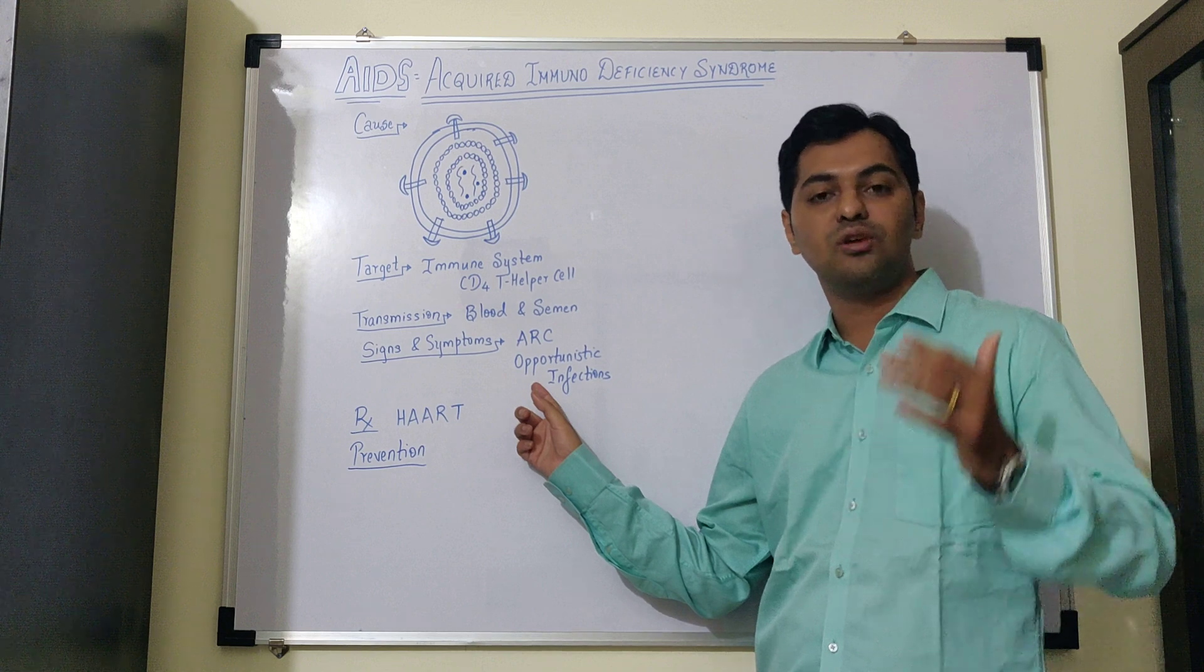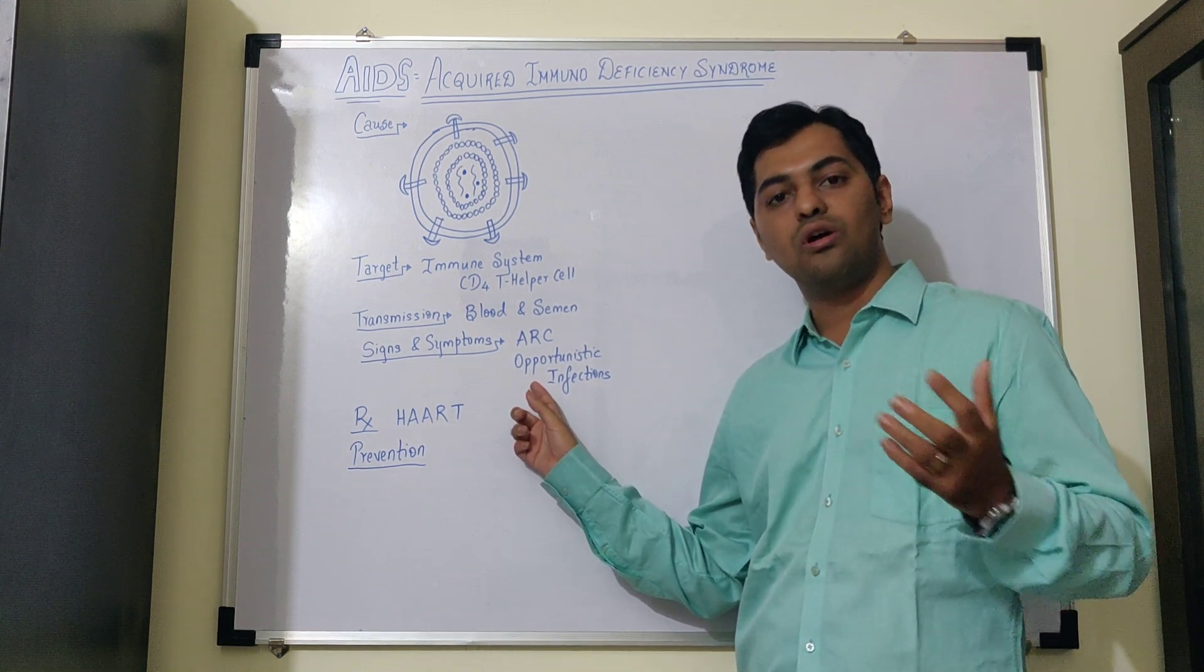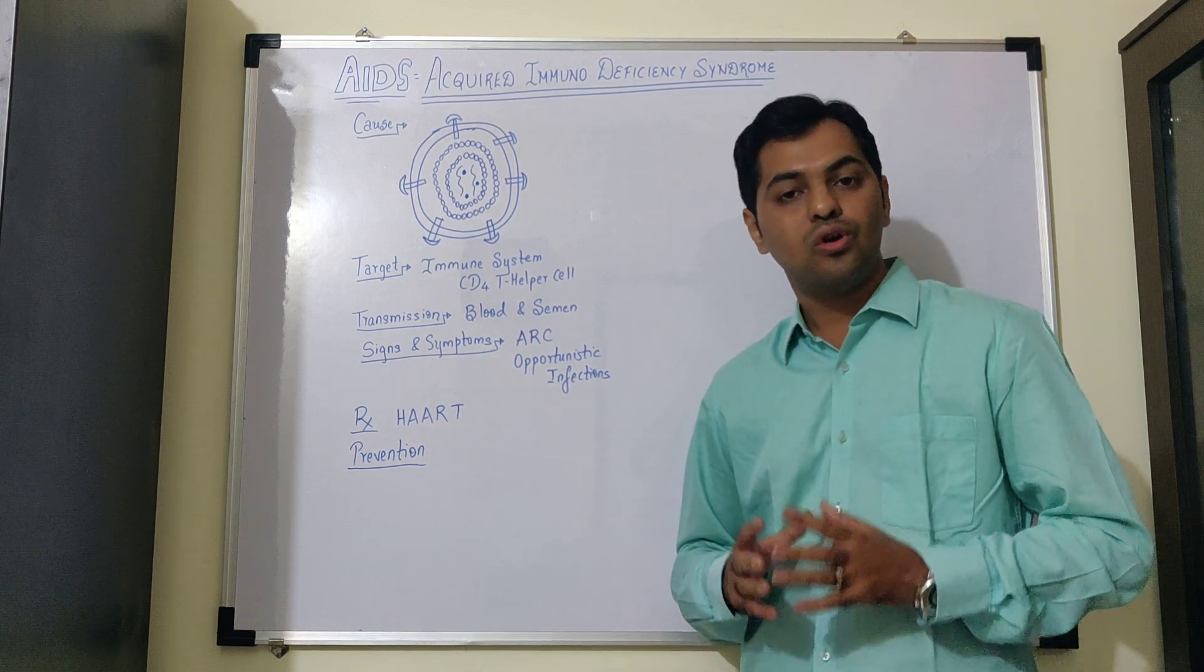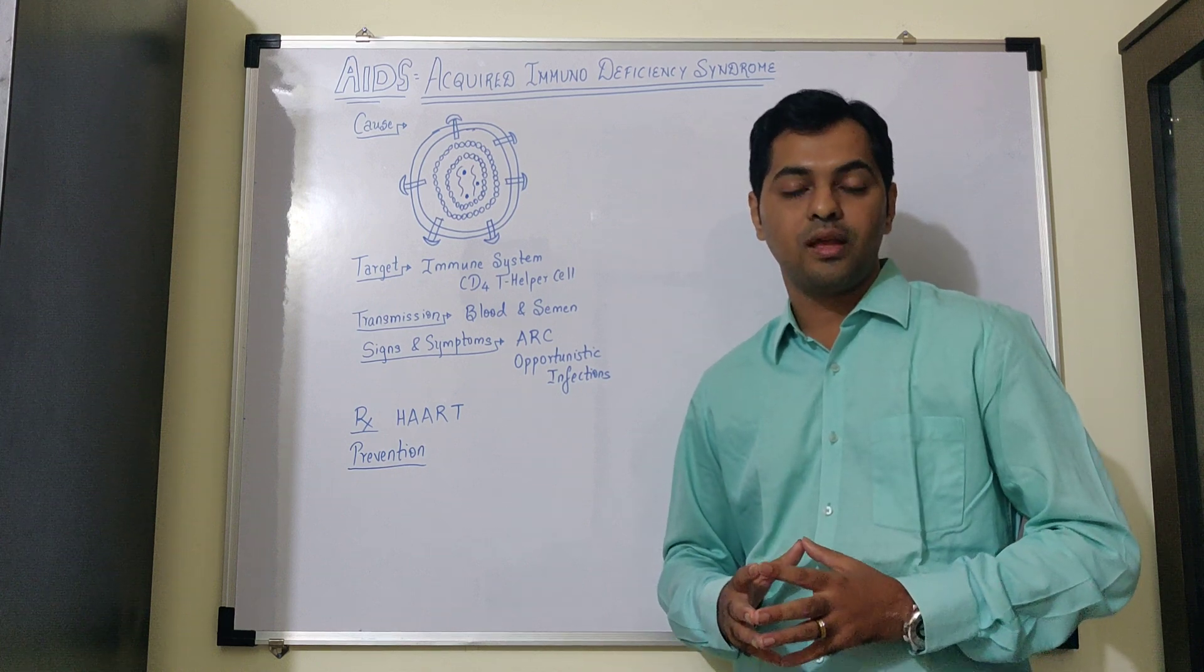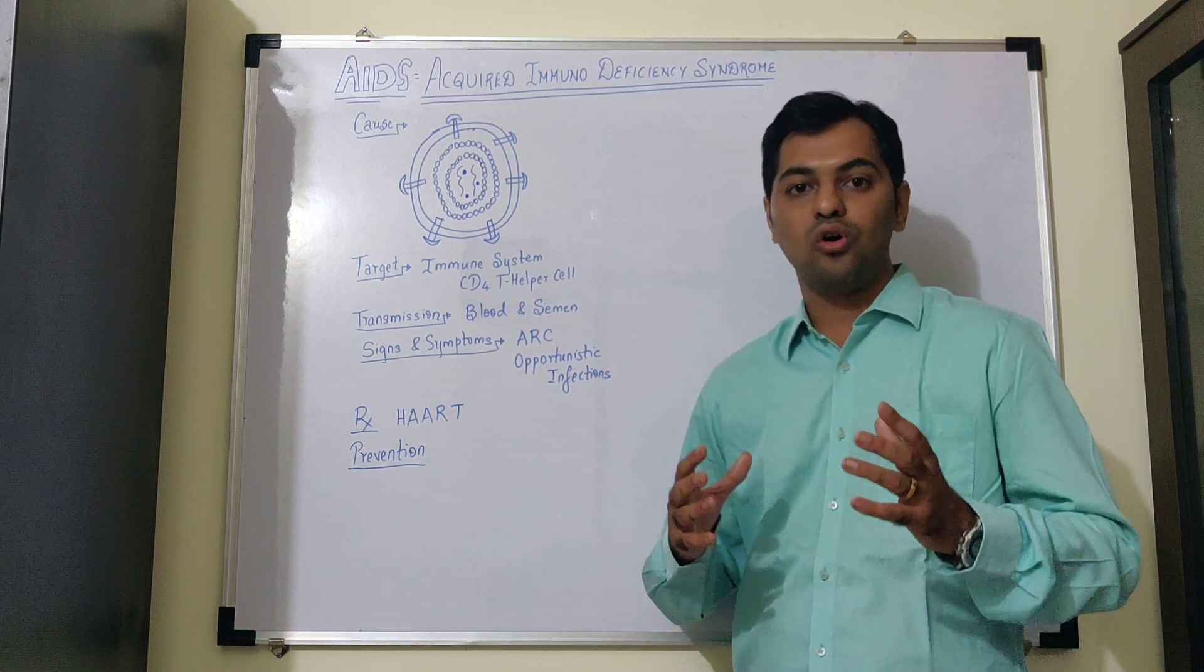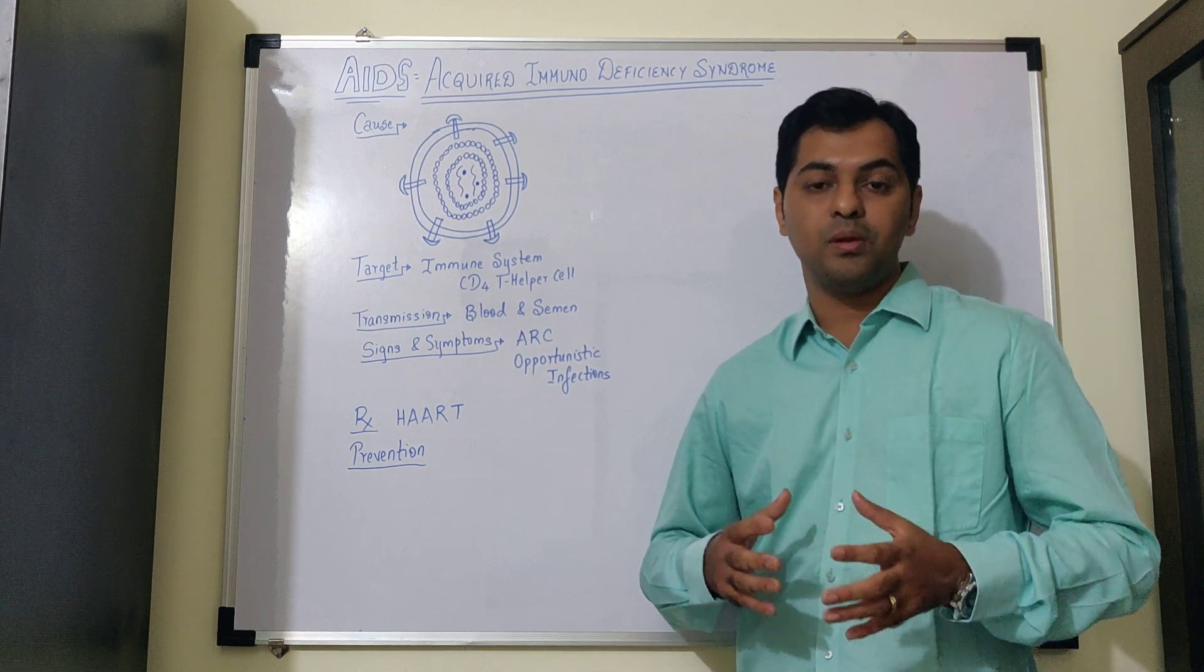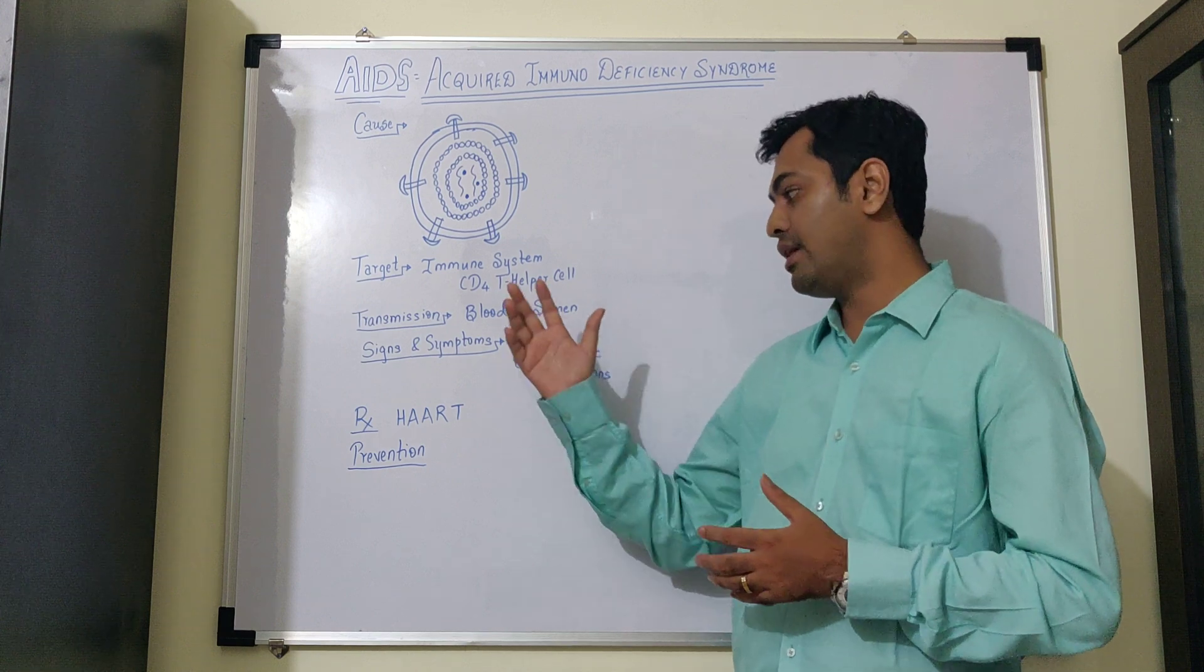And patient experiences variety of opportunistic infections. The reason for that is since the immune system has dropped down, many such infections occur in such HIV infected people, for example, tuberculosis or even Kaposi's sarcoma, a type of skin cancer. Candidiasis and other infections also infect such people.